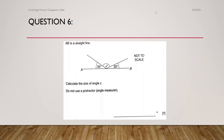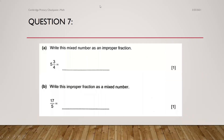Let's move to question number 7, part A: write this mixed number as an improper fraction. We know how to change a mixed number to an improper fraction — first you multiply the denominator and the whole number, then you add the numerator. 4 times 5 is 20, and you add 3, so 20 plus 3 is 23. Make sure you write the same denominator.